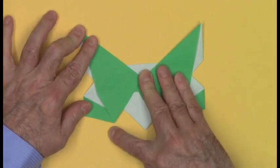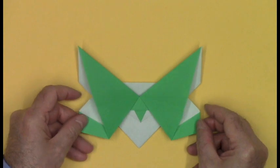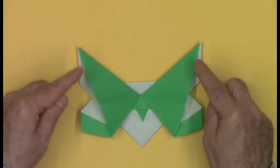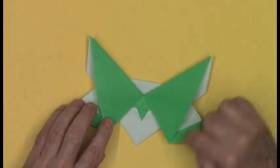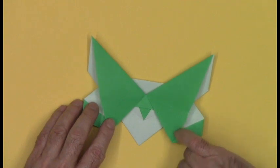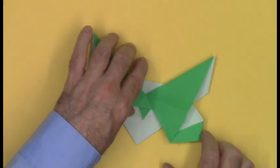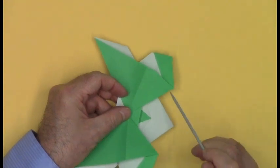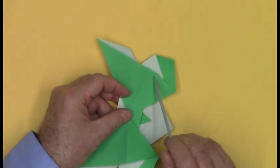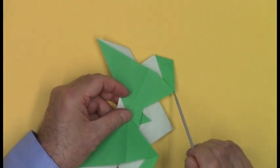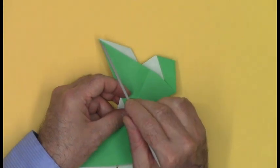And squash. The wing pattern could stay like this, but I prefer to make a straight folded edge from the bottom corner to the top.